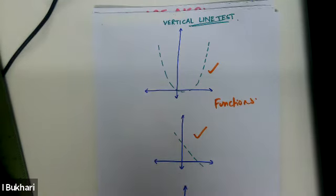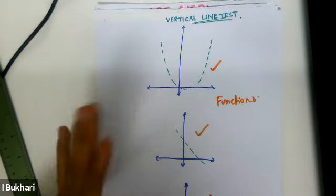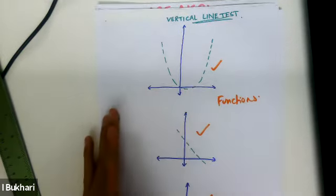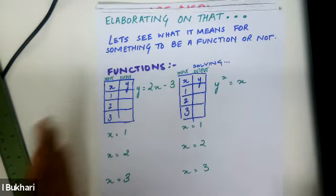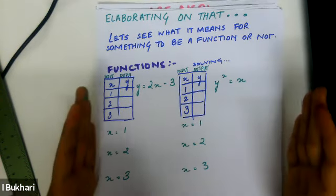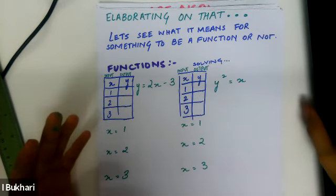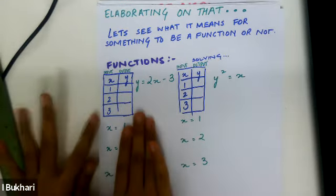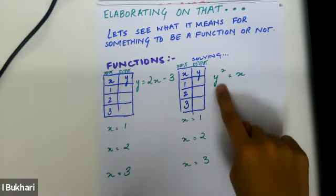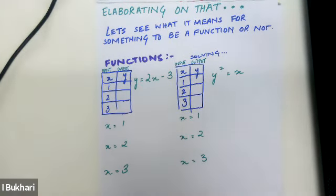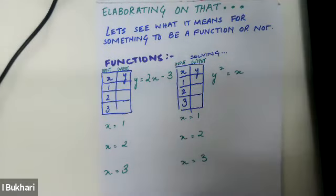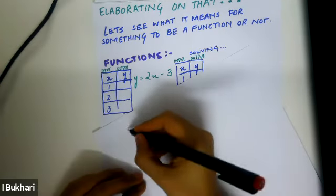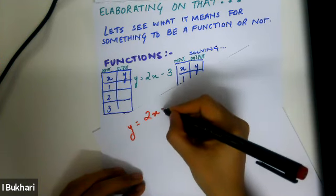Now that you know how to recognize a function graph, let's see what it means in mathematical working. Let's do this example: the function is y equals 2x minus 3. I'm going to draw a table for the x and y values, with x equal to 1, 2, and 3.